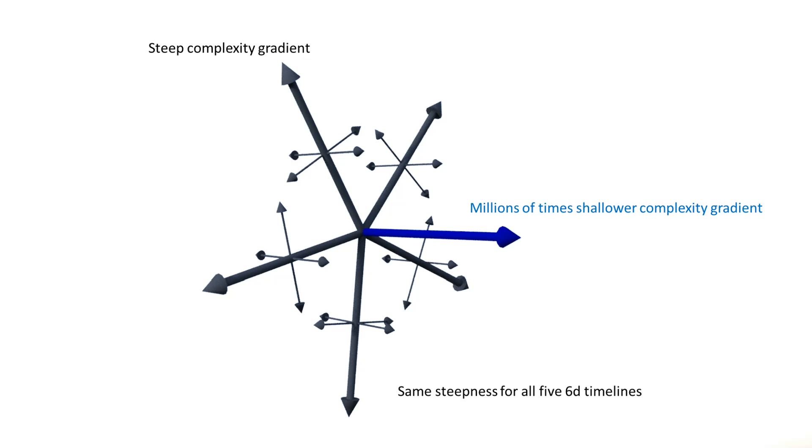We said that the complexity gradient of the blue timeline is millions of times shallower than the one of the black timelines. So a decay by drifting from the black timelines is on average millions of times faster than the decay due to drifting from the blue one. In physics these two modes are referred to as strong and weak decay.